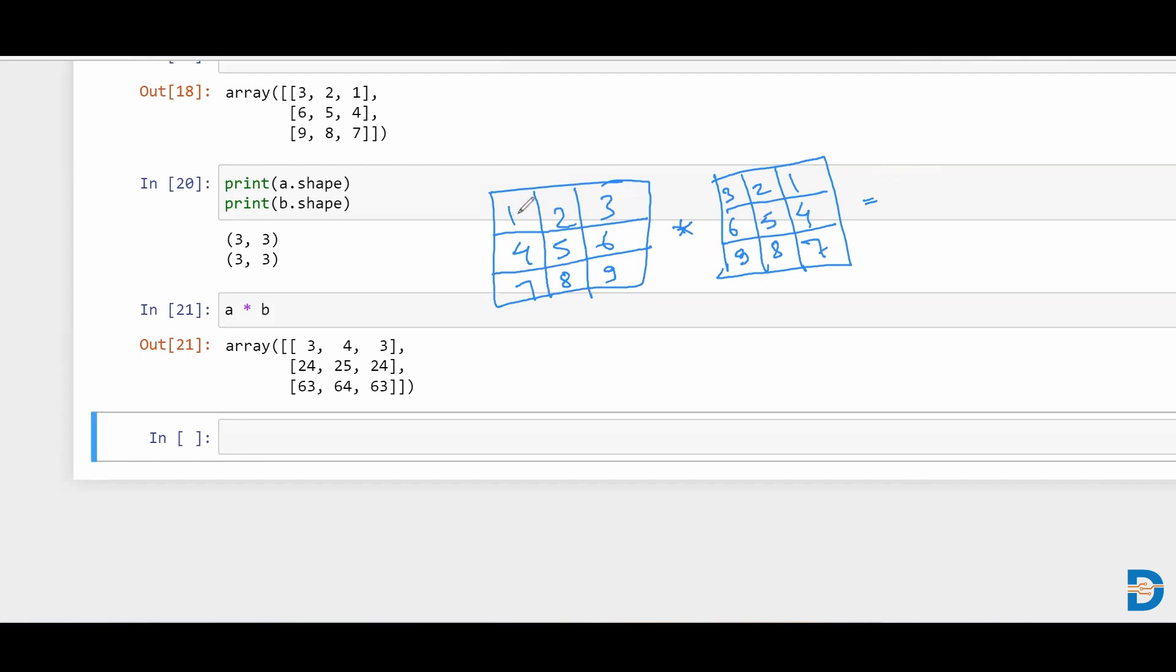So over here, one is multiplied with three, you get three, then two is multiplied with six, so you get 12. And then three is multiplied with nine, three times nine is 27. So when you add it up, you'll see that the sum is nothing but 42. So I'll just write 42.